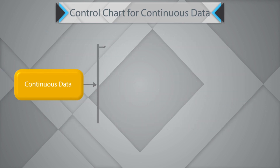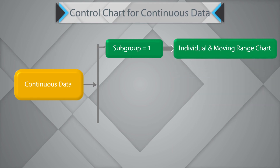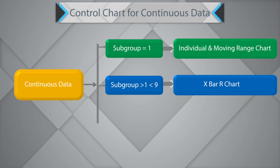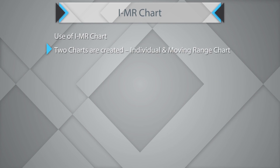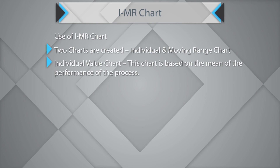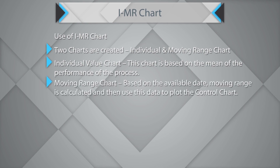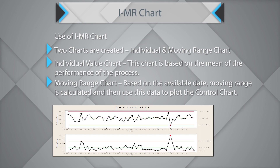Should you have a single subgroup, you could use the Individual and Moving Range chart, or the IMR chart. Should you have a subgroup size greater than 1 and less than 9, you could use the X-bar R chart or mean range chart. If you have a subgroup greater than 2, you could use the X-bar S or mean standard deviation chart. When you draw the IMR control chart, two charts are created: one referred to as the individual value chart and the other referred to as the moving range chart.